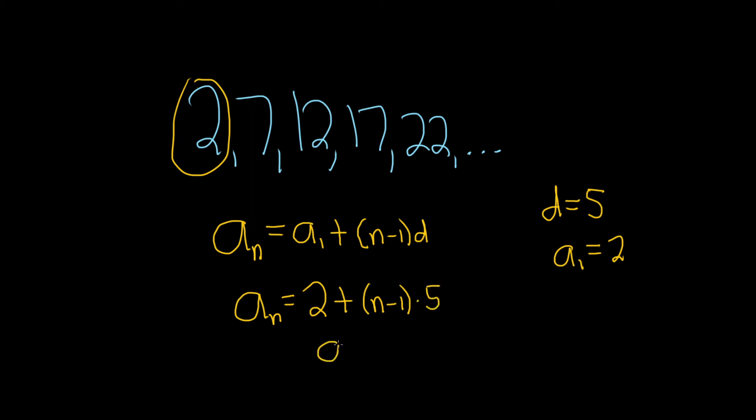So a_n is equal to 2. Now we can distribute the 5, so 5 times n is 5n, and 5 times negative 1 is negative 5.